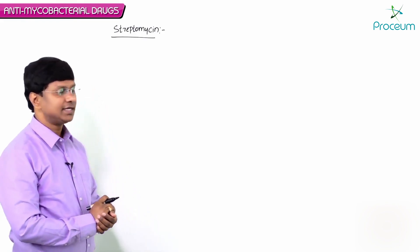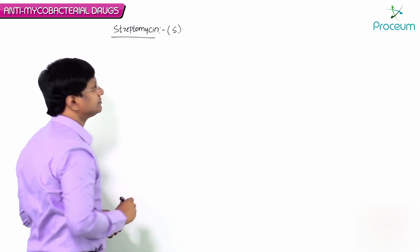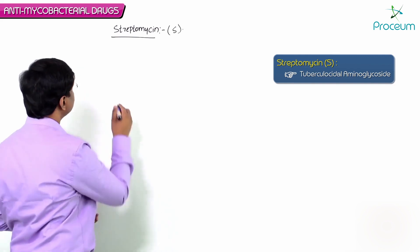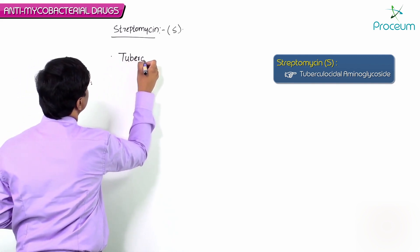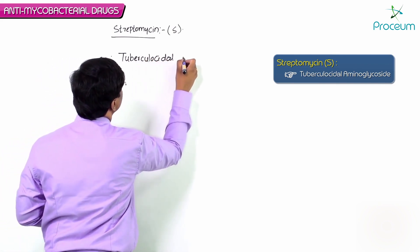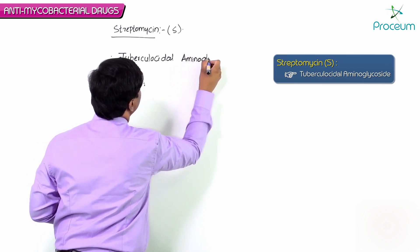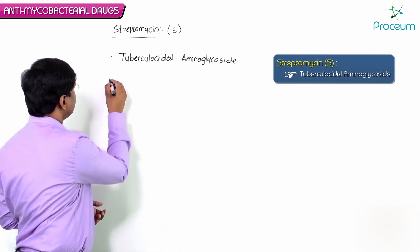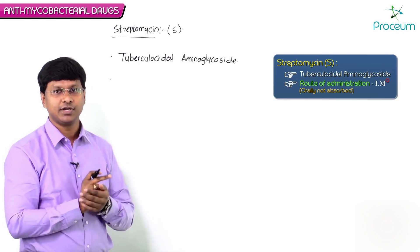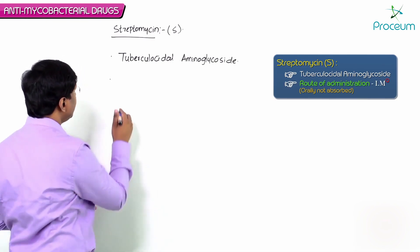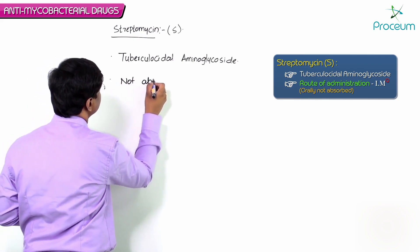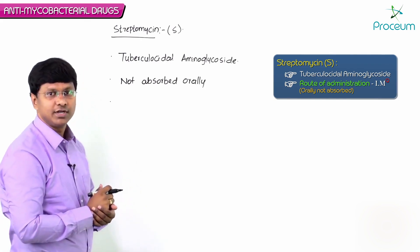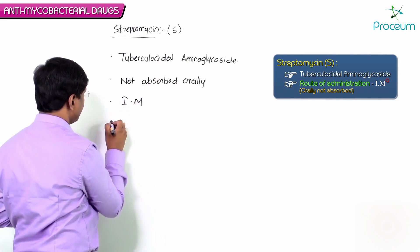Let me discuss another anti-tubercular drug — streptomycin. This is a tuberculocidal aminoglycoside. This particular streptomycin is not absorbed orally and has to be administered by intramuscular injection.